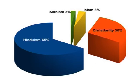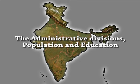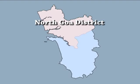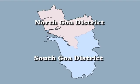The percentage of different religions prevalent in the state are: Hinduism 65%, Christianity 30%, Islam 3%, and Sikhism 2%. For administrative purposes, the state has been divided into two districts: North Goa district and South Goa district. Goa has a unicameral legislature consisting of a 40-member legislative assembly, headed by a chief minister who wields the executive power.